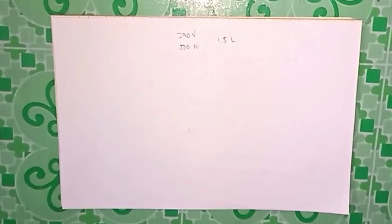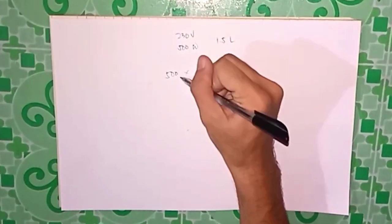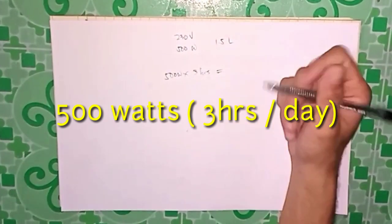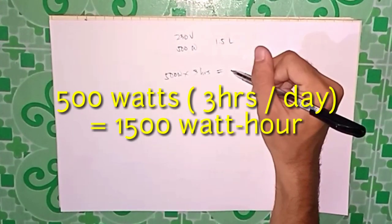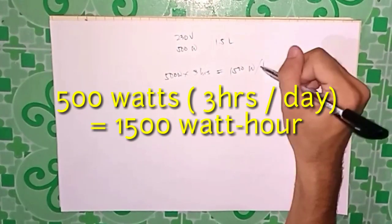We typically use a rice cooker 3 times a day - in the morning, at noon, and at night. That is equivalent to 1 hour. Let's say 1 hour. So 500 watts times 3 hours, and that is basically 1500 watts.